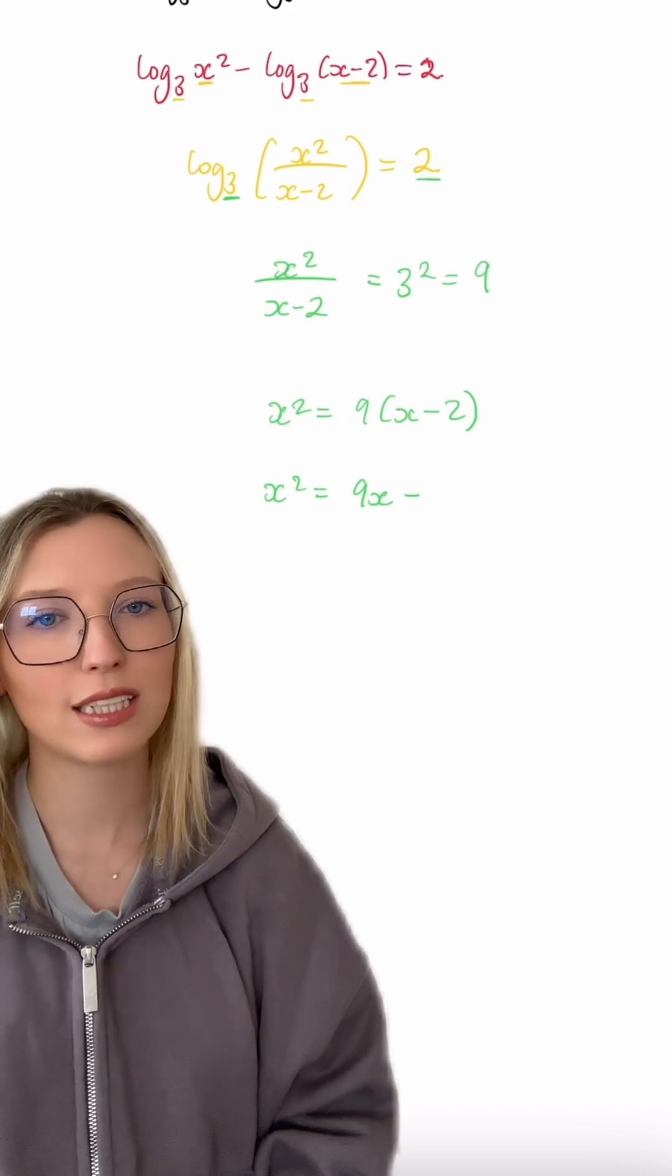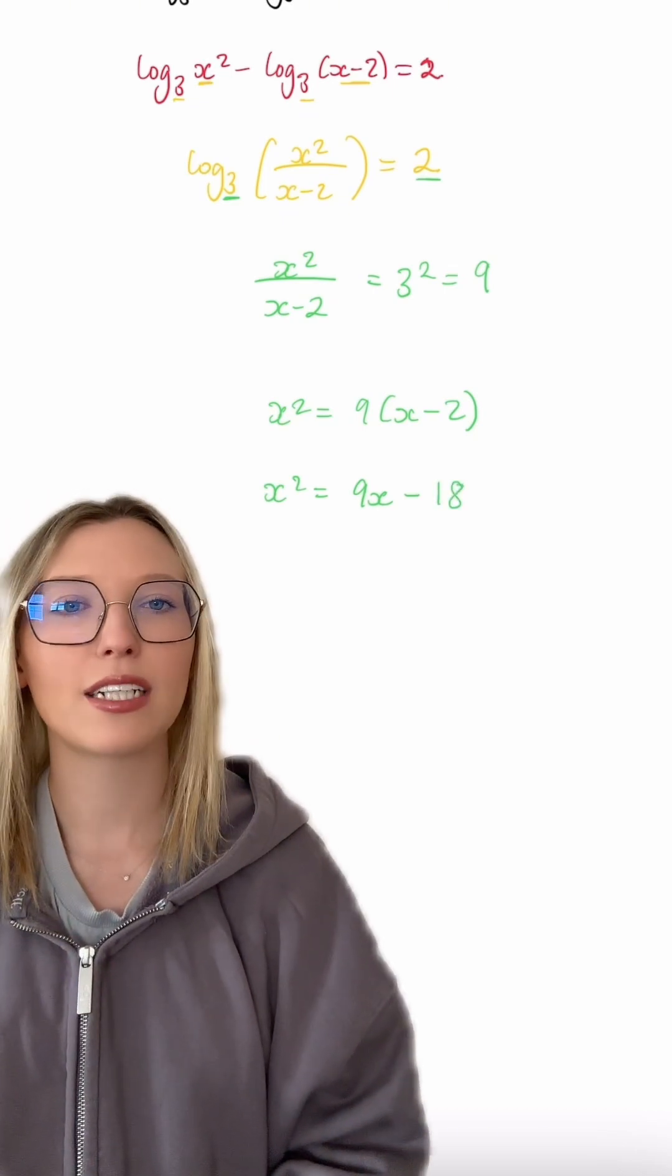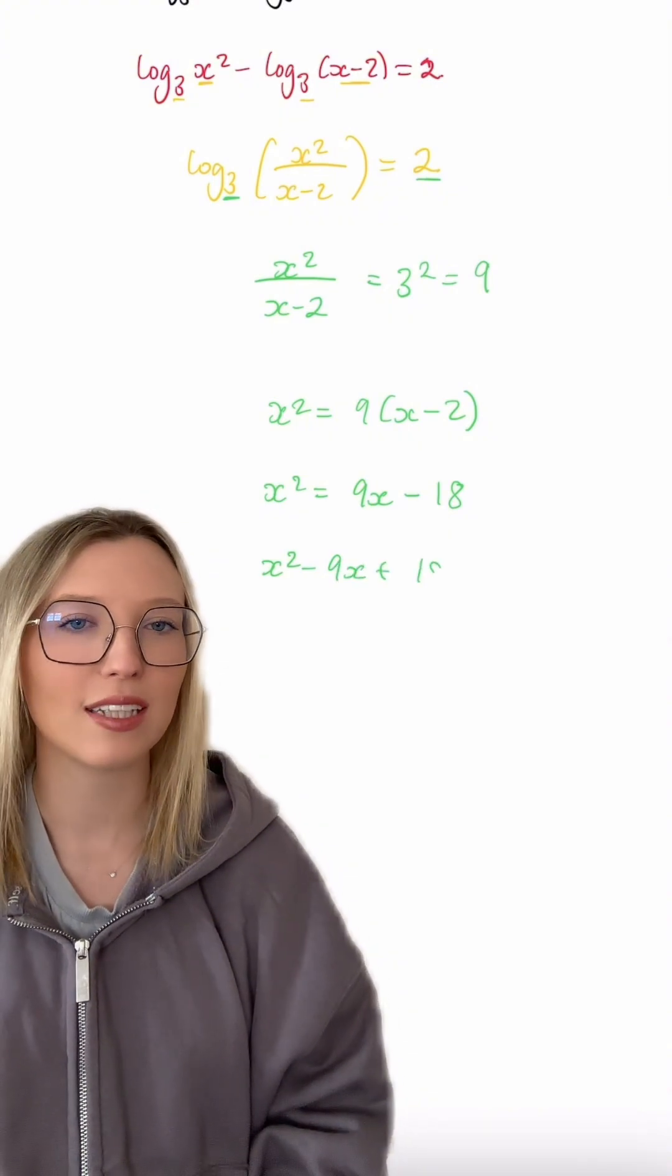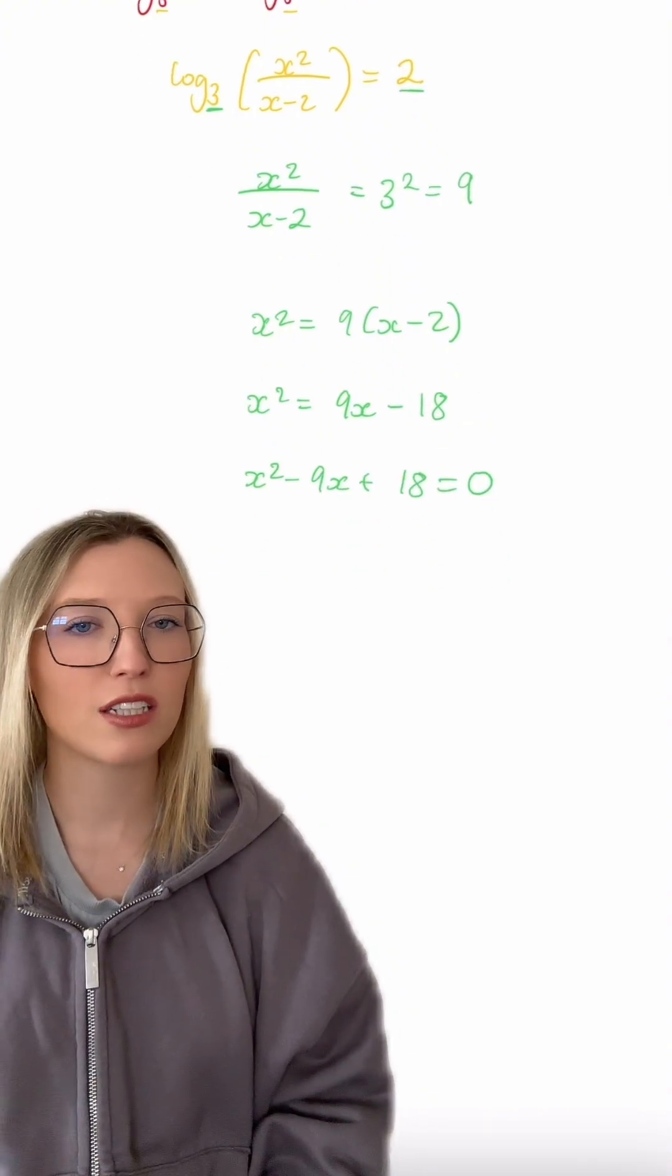And bringing everything onto one side, we're going to get x squared minus 9x add 18 equaling 0, which we then just need to factorise to solve for x.